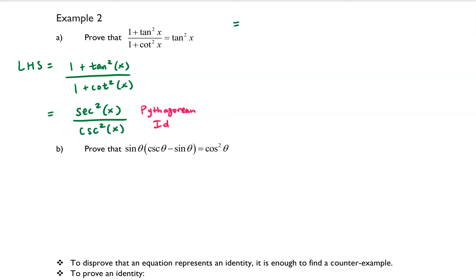From there, we know that secant is 1 over cosine, and cosecant is 1 over sine. So if we change their location from the numerator to the denominator and vice versa, then by the reciprocal identities we get sine squared x over cosine squared x.